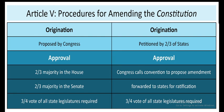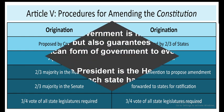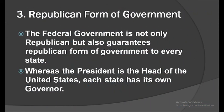Now, republican form of government. As we have already mentioned, the federal government is republican in form, meaning the president is elected. Not only the president, but the federal government also guarantees a republican form of government to every state — each of the states should have a governor as the head of state.